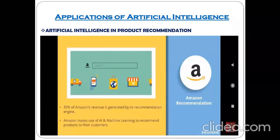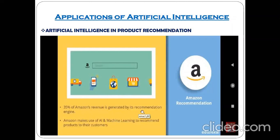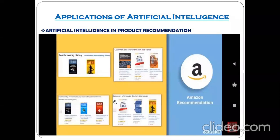Moving to Amazon recommendations: 35% of Amazon revenue is generated by its recommendation engine. Amazon makes use of artificial intelligence and machine learning to recommend products to customers. So whatever reviews or purchases happen on Amazon, 35% is generated because of its recommendation engine, which utilizes artificial intelligence and machine learning.